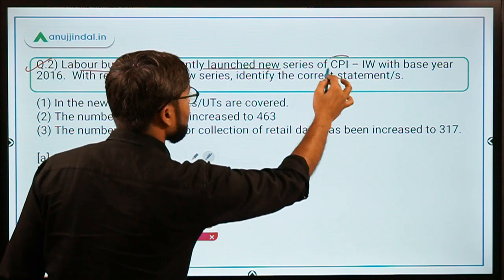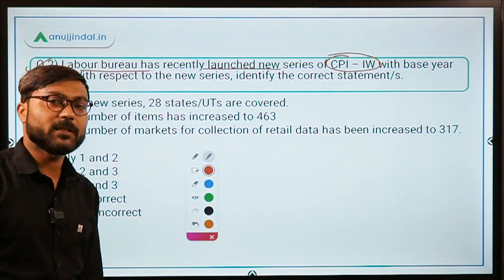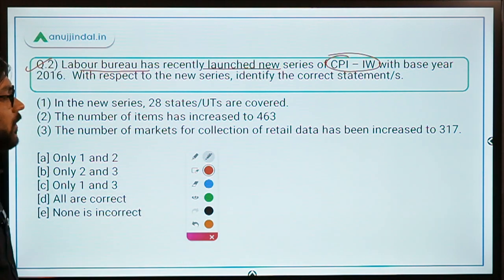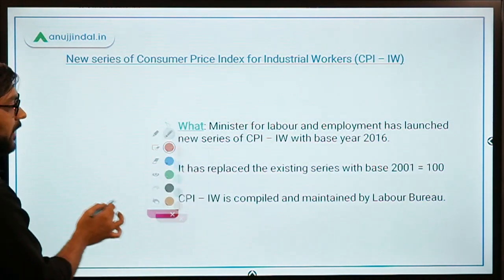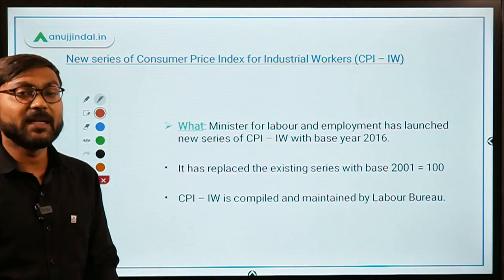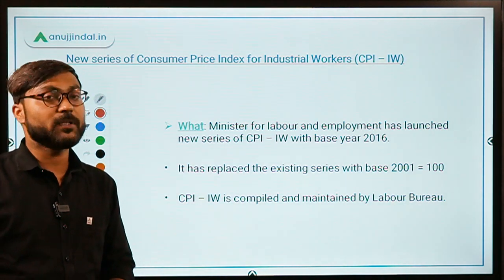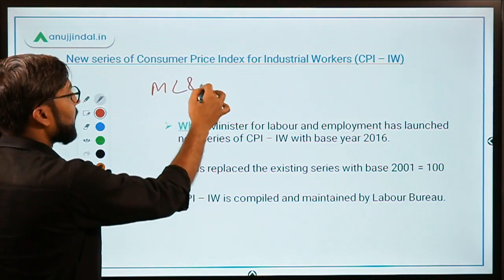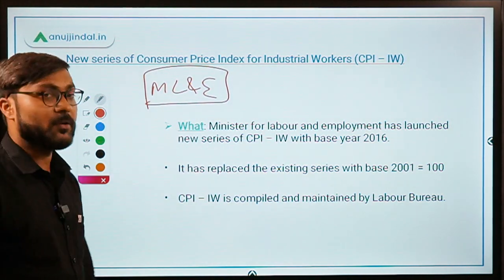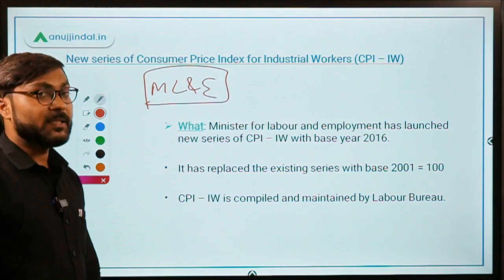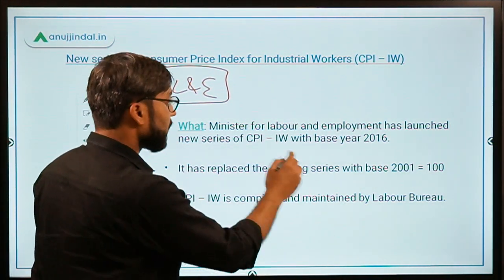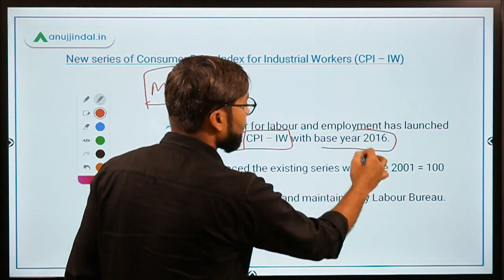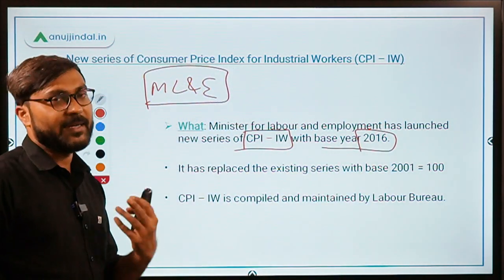Moving on to question number two: Labor Bureau has recently launched a new series of CPI-IW. Labor Bureau is an attached office of the Ministry of Labor and Employment. The Labor Bureau has launched the new series of CPI-IW with the base year 2016. IW stands for Industrial Workers. There are five types of CPI: CPI-IW, Agricultural Laborers, Rural Laborers, Urban CPI, and Rural CPI.